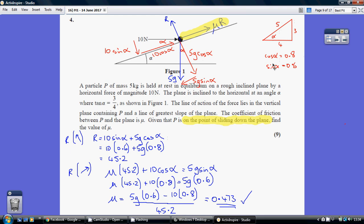So back to this, I can substitute 0.6 in for sin alpha and 0.8 in for cos alpha. Popping that into your calculator, you get your normal reaction being 45.2.